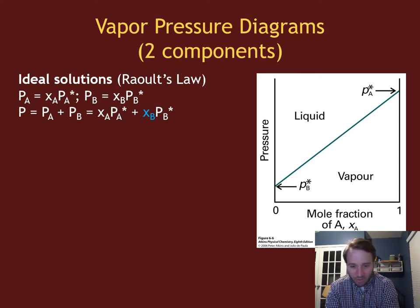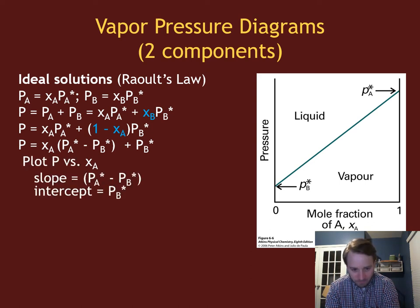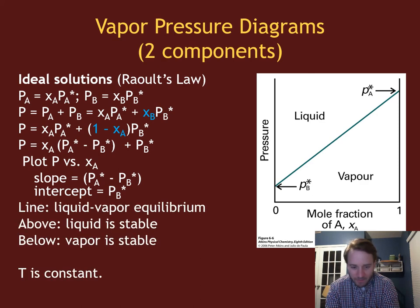If we assume an ideal solution, we're obeying Raoult's Law. The total pressure equals the pressure of A plus the pressure of B, which equals the mole fraction of A times the pure vapor pressure of A, plus the mole fraction of B times the pure vapor pressure of B. Substituting the relationship between mole fractions of A and B, we get total pressure as a function of just the mole fraction of A, with the slope being P_A* minus P_B* and the y-intercept being P_B*.